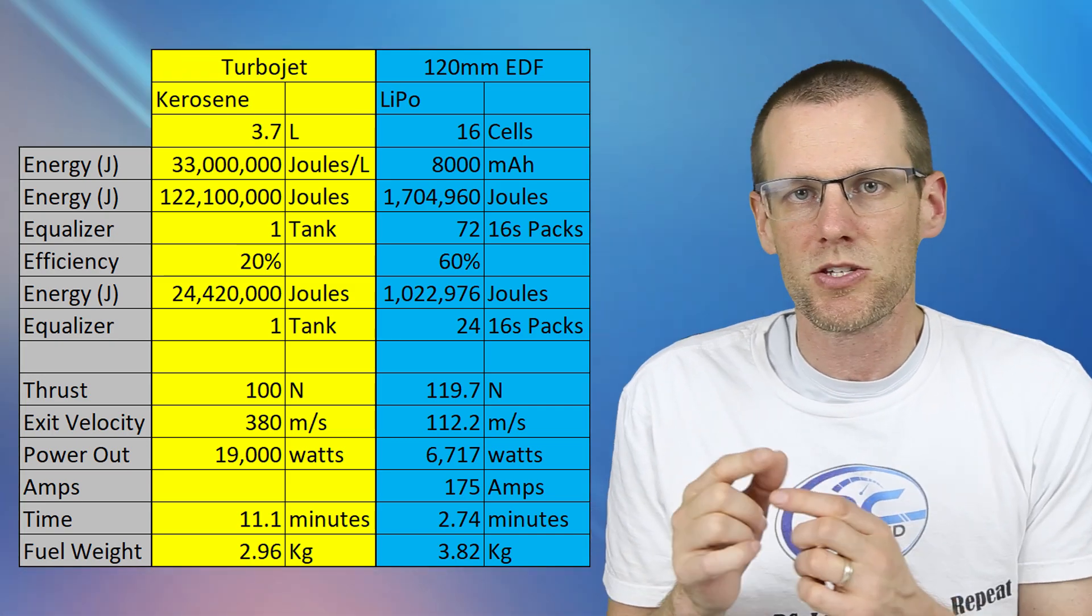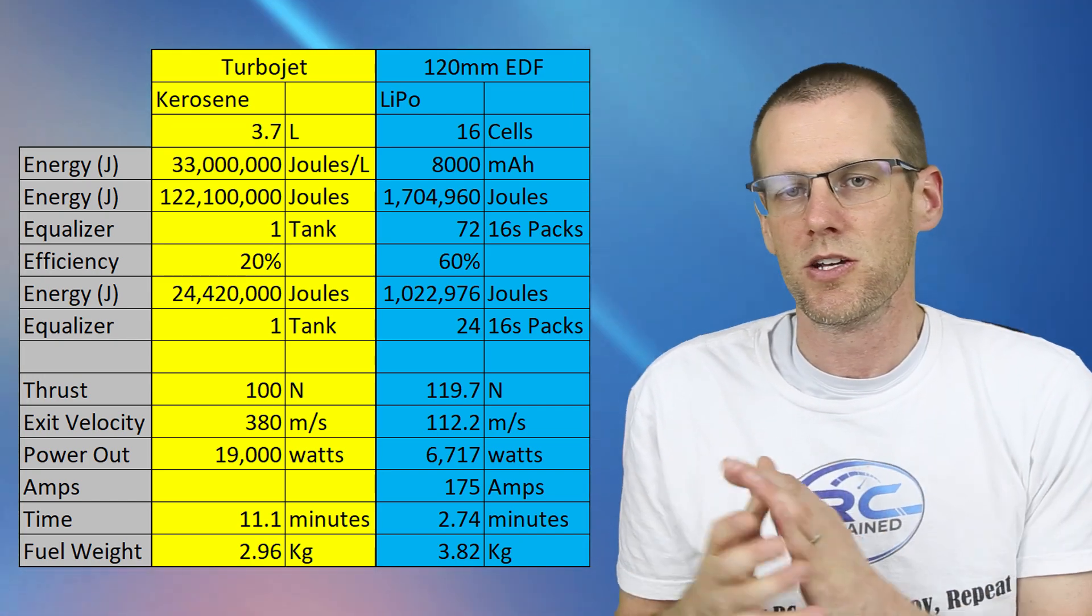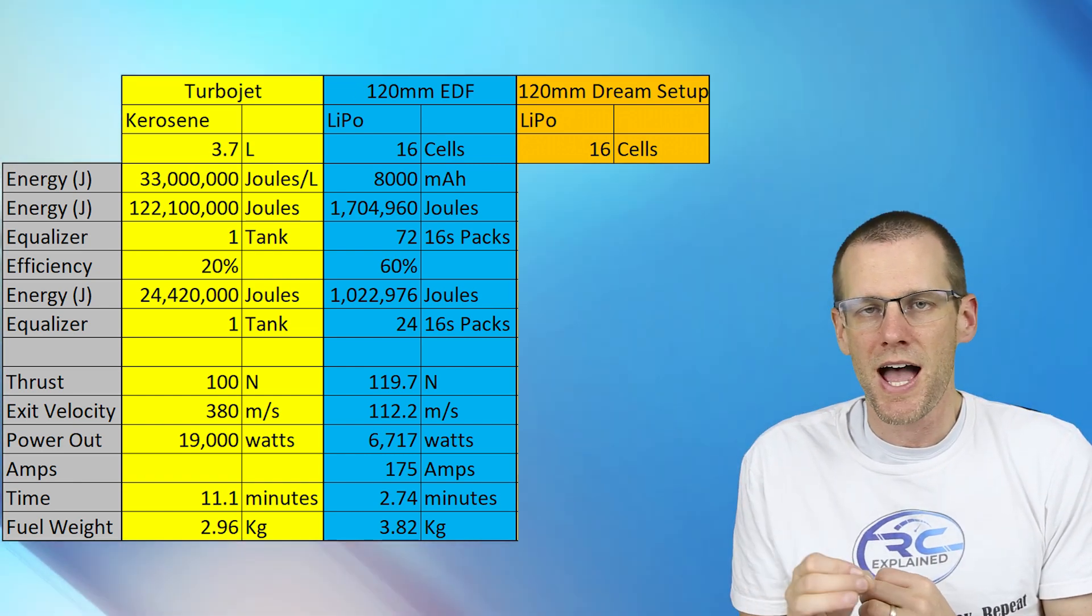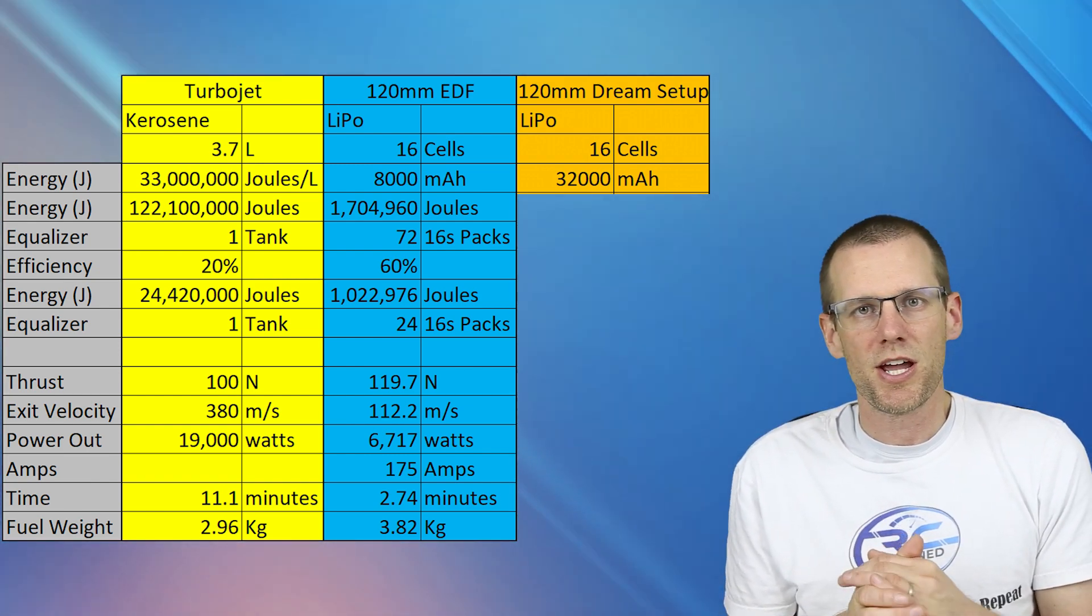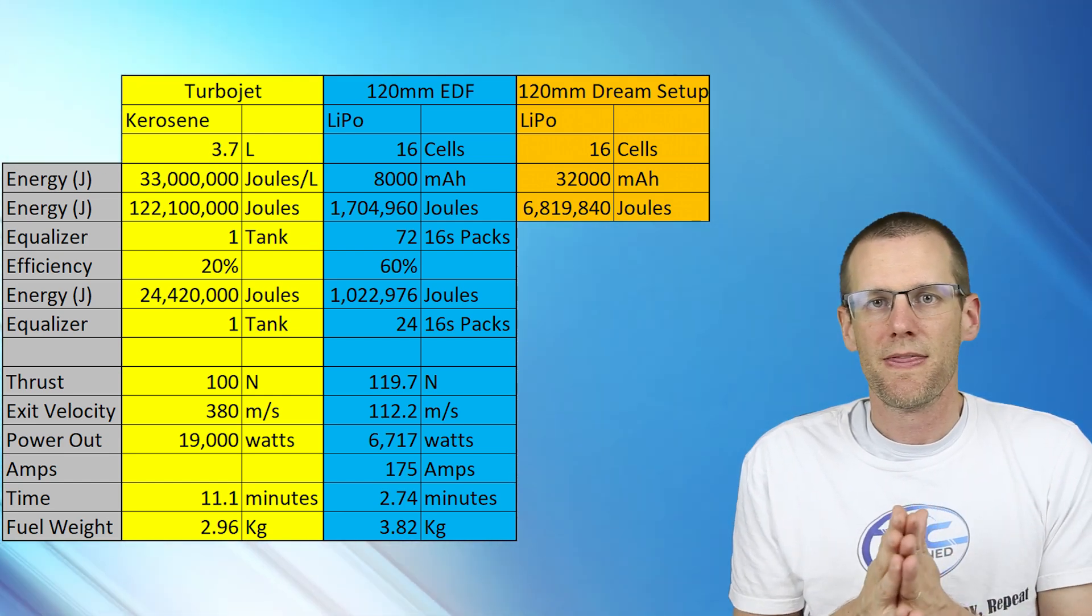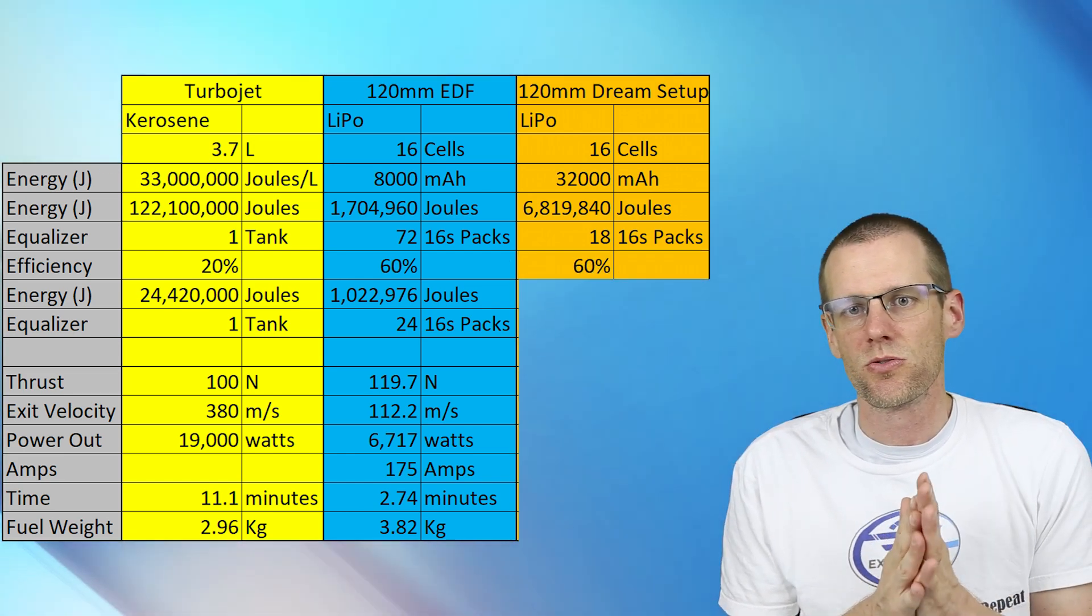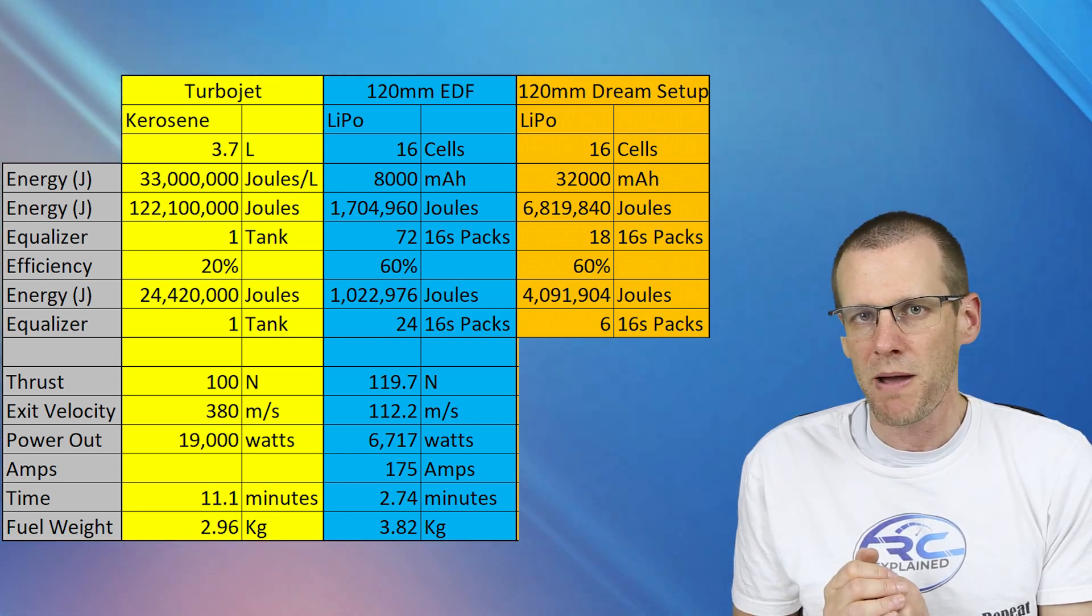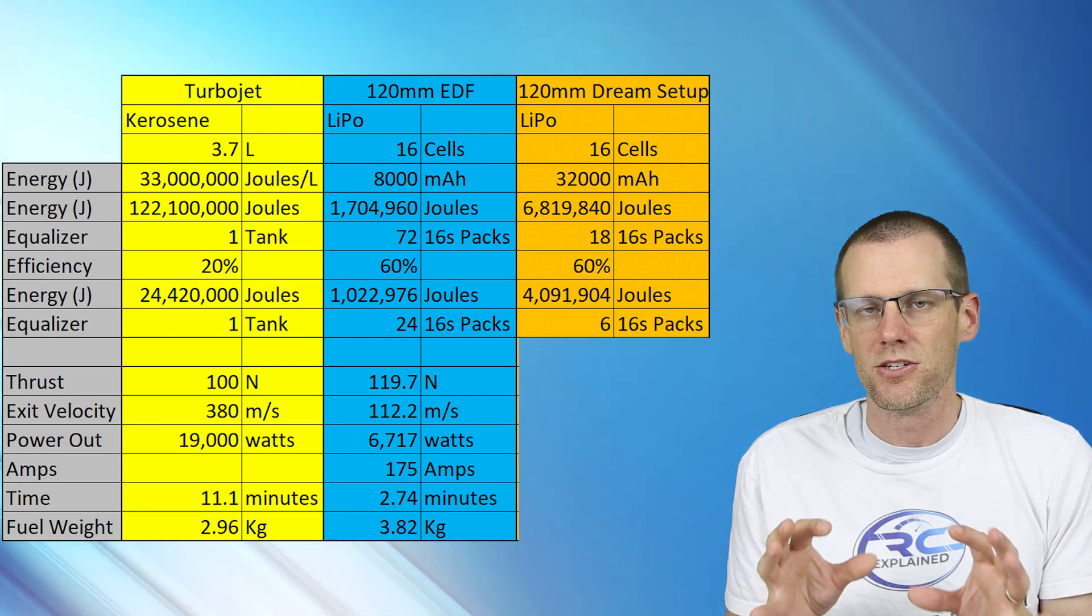Now what I want to do is flip things over to a dream setup. This is a dream setup because this is going to be highly impractical where you cannot do it. If we take our 16 cell setup and pretty well equalize the amount of run time that we get, we're going to end up with needing 32 amp hours. That gives us a total amount of energy of 6.8 mega joules, which is still very far off from the 122 mega joules that the kerosene is going to have for that 3.7 liter tank. Multiply that by our efficiency, we're comparing 24 mega joules versus about four mega joules of energy. And the equalizer there is we would need six of these specific battery packs to equal out the amount of energy we get from that kerosene after efficiency of these two systems.